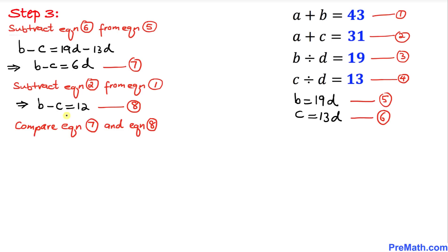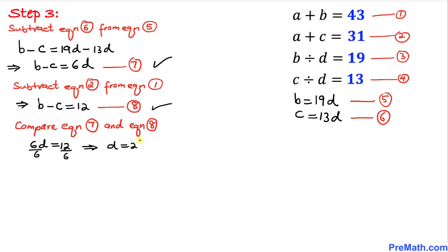Now we are going to compare equation seven and equation eight. The left-hand sides are the same, so we can write 6D equals 12. Dividing both sides by 6, D equals 2.